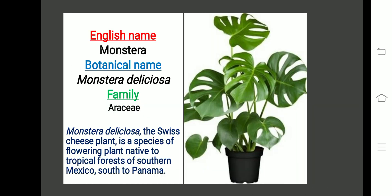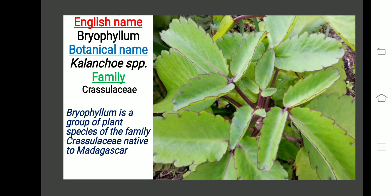The next plant is Monstera. Botanical name is Monstera deliciosa, family Ericaceae. Monstera deliciosa, the Swiss cheese plant, is a species of flowering plant native to tropical forests of southern Mexico south to Panama.